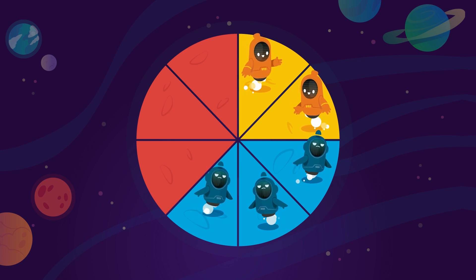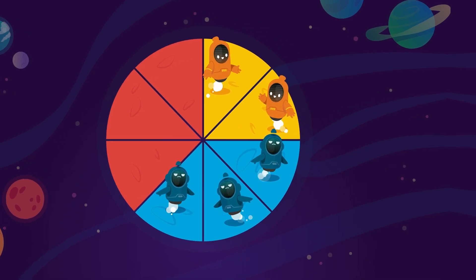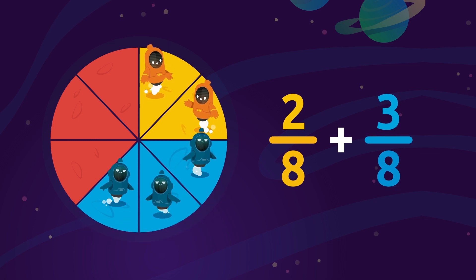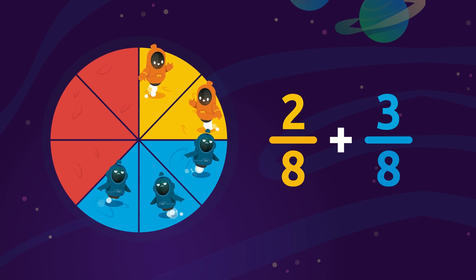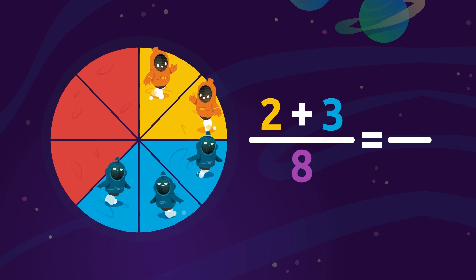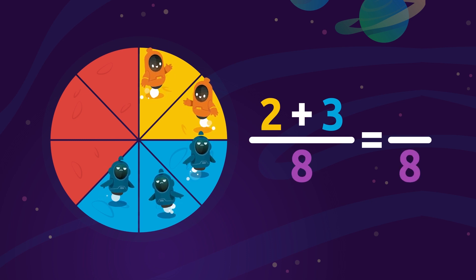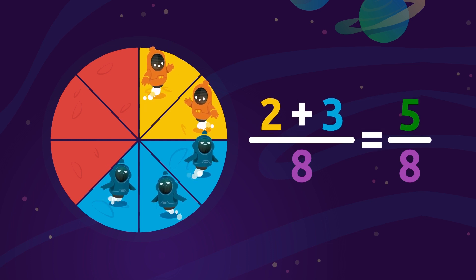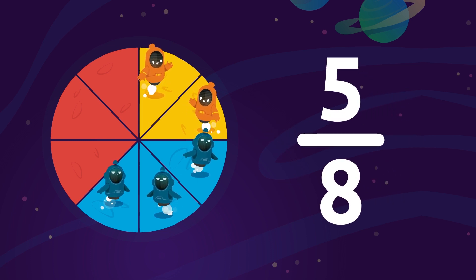What fraction represents the overall amount of land occupied by all the aliens on the planet? To find out, we need to add the fractions: 2 over 8 plus 3 over 8. The result has the same denominator — the number 8. To calculate the numerator, we add 2 and 3, which equals 5. The result is that five-eighths of the land are occupied by aliens.